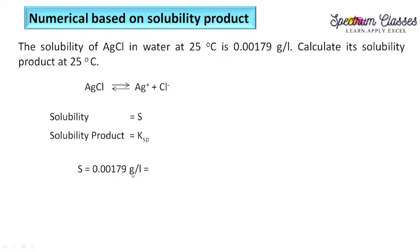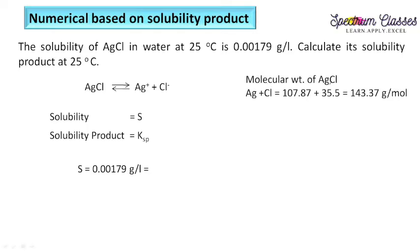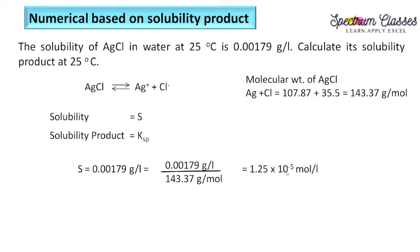To convert grams into moles, you need to calculate the molecular weight of silver chloride. The atomic weight of silver plus the atomic weight of Cl gives 143.37 grams per mole, meaning one mole of AgCl equals 143.37 grams. Dividing 0.00179 grams per liter by 143.37 grams per mole — grams cancel — we get 1.25 × 10⁻⁵ mole per liter.